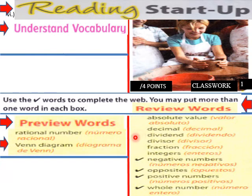Preview words: rational number and Venn diagram. So these are some new words here. We've had a lot of these so far. These are new here.